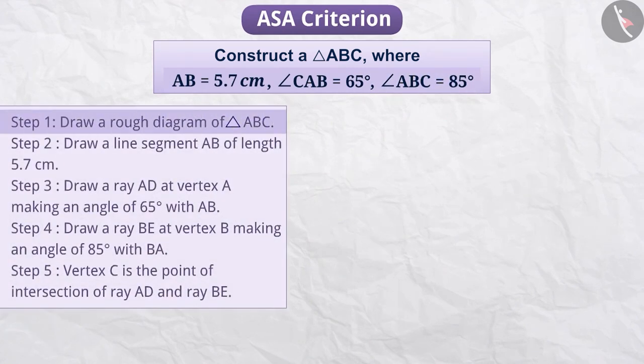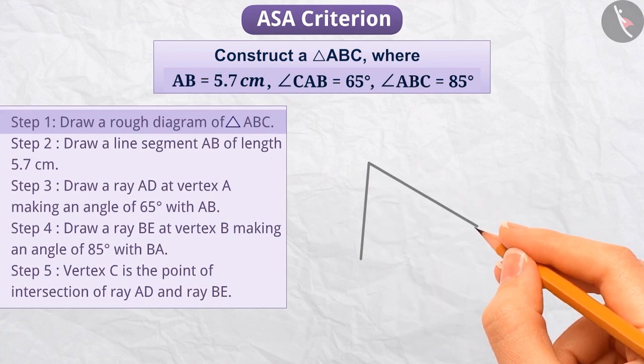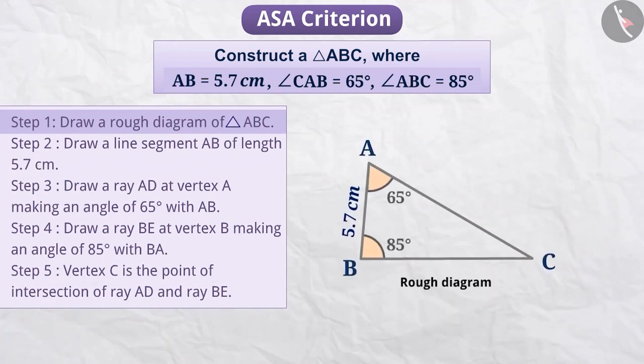Step 1. First, we draw a rough diagram of triangle ABC with the given measurements. This helps us to determine the procedure for the construction of the triangle. In this way, we will be able to construct the triangle easily.